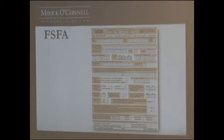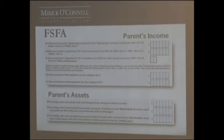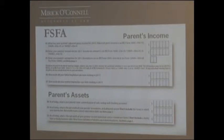The FAFSA is an 11-page document that pulls in information both on the income and assets of the student as well as the parent. You see gross income, some particular assets on the bottom — investments which include the parents', not retirement but secondary real estate, and any other investments the parents have. The primary residence is not included in the parent's assets on this form.